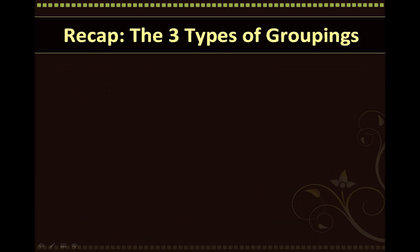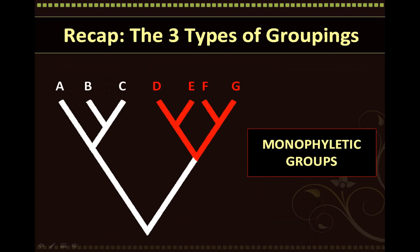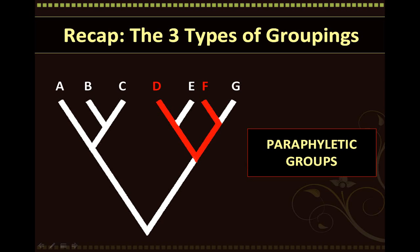Here's a recap of the three types of groupings possible. First, we have monophyletic groups, which contain all the descendants of a common ancestor. Secondly, we have paraphyletic groups — these groups contain some, but not all, of the descendants of a common ancestor. Sometimes closely related organisms may differ a great deal, leading us to exclude them from the group, which can lead to the construction of paraphyletic groups.